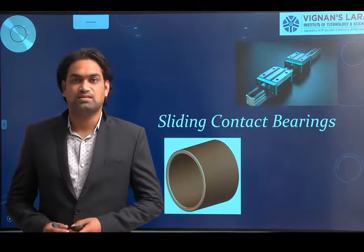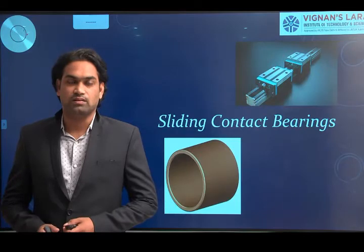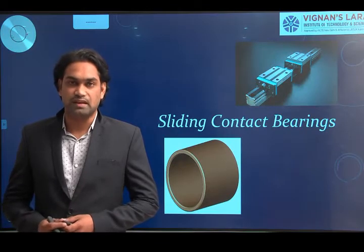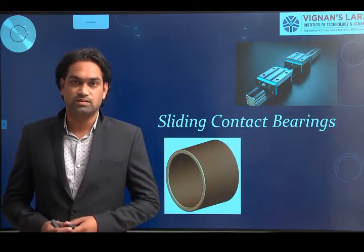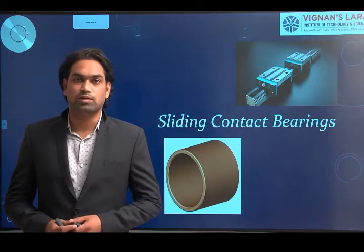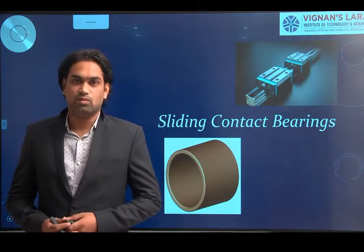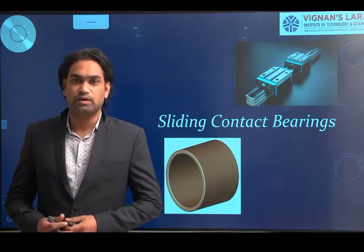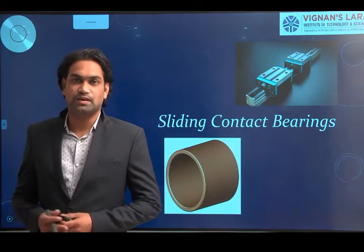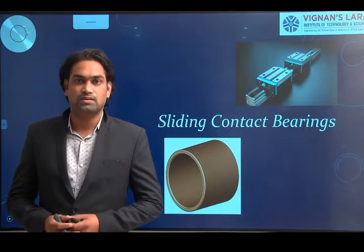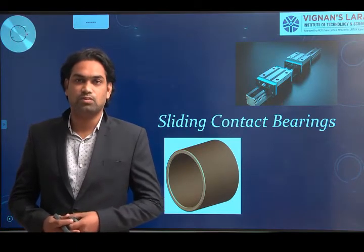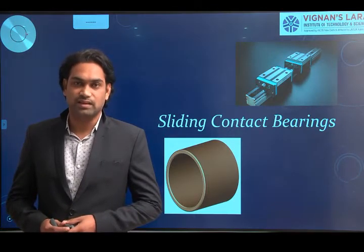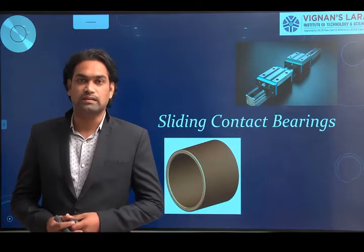Good morning students. In yesterday's class we discussed the main necessity of bearings — why bearings are used and why they are essential in many machine components — and also the various types of bearings based upon two different criteria. Coming to the first topic in design of machine members, Unit 1 bearings: based upon the nature of contact between the two surfaces (the bearing surface) and their relative motion, the first kind is a sliding contact bearing.